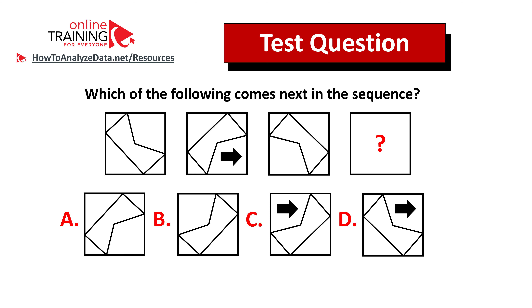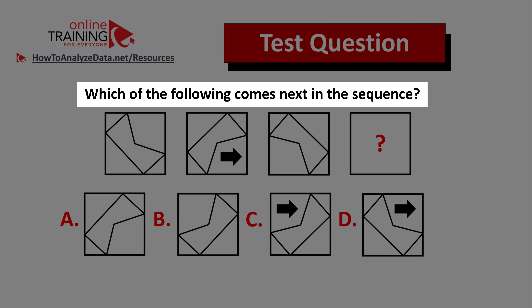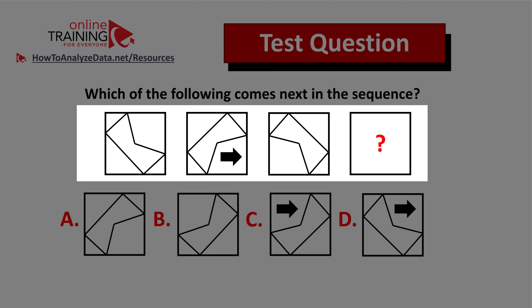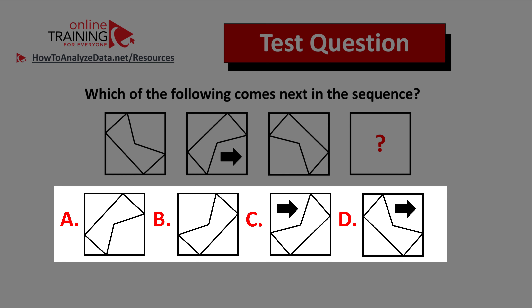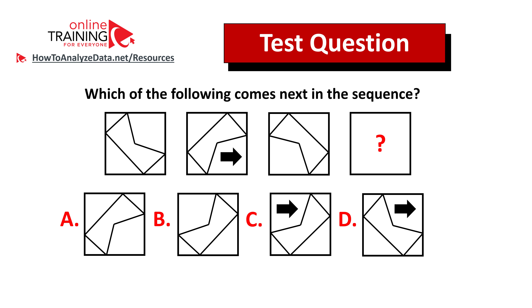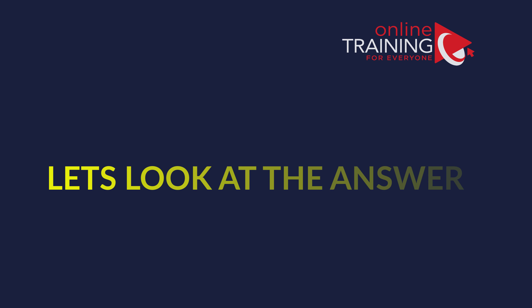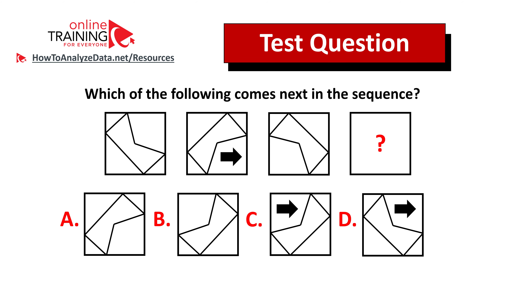Let me share with you a tricky question from the test which validates your knowledge of pattern recognition and logical reasoning. Which of the following comes next in the sequence? You're presented with four squares. The fourth square has a question mark, which means you need to figure it out. You have four different choices: A, B, C, and D. The answer is not obvious, but give yourself 10 to 15 seconds to see if you can find it. Did you figure out the solution? Let's continue together.